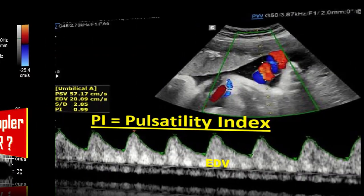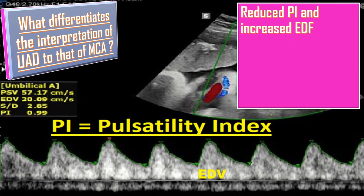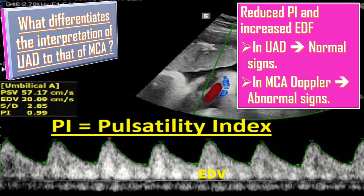What differentiates the interpretation of umbilical artery Doppler from middle cerebral artery Doppler? In umbilical artery Doppler, reduced pulsatility index and increased end-diastolic flow are considered normal signs. However, in MCA Doppler, reduced pulsatility index and increased end-diastolic flow are considered abnormal signs, as they indicate brain sparing.